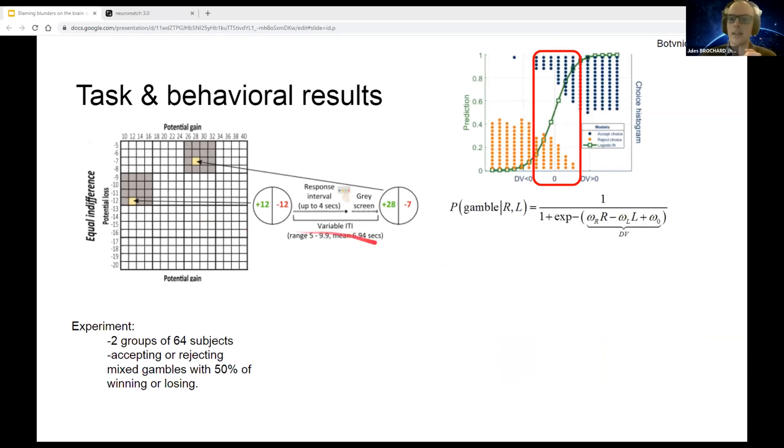Classically, this kind of task is analyzed through a neuroeconomics model, which is just a logistic function applied on a linear combination of gain and loss plus a given bias.